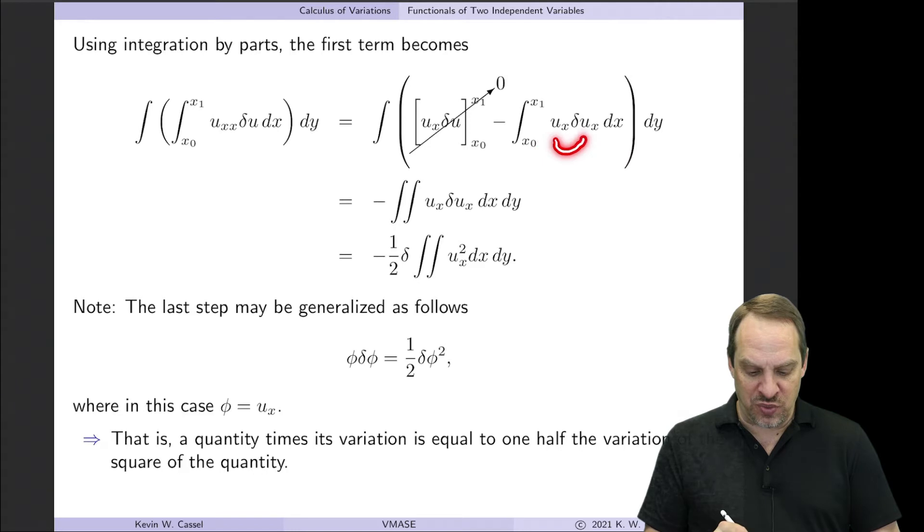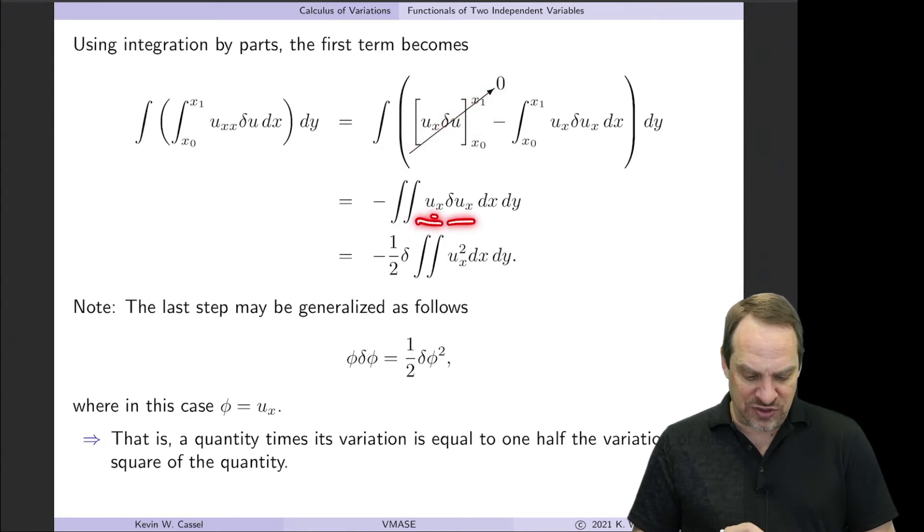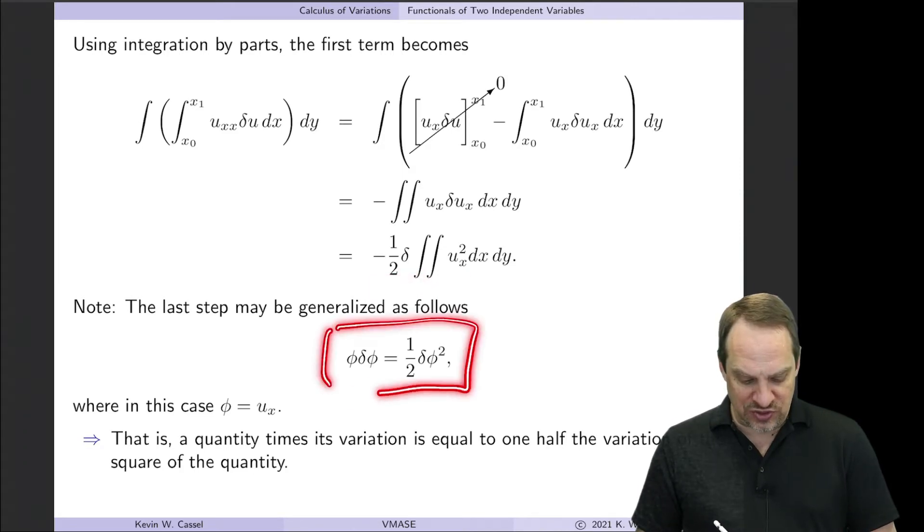Then I have minus Uₓ delta Uₓ. And so you can see I've done what I wanted. I've moved one derivative off of the Uxx onto the delta U. So I have something times the variation of something. Now I've just repeated it here without this first term. So when I have something times the variation of something, that's 1/2 times the variation of the something squared. Again, just using this general result down here.